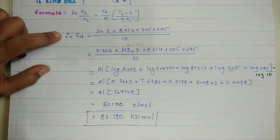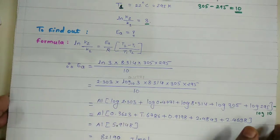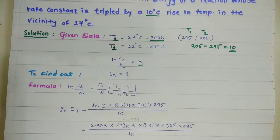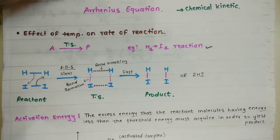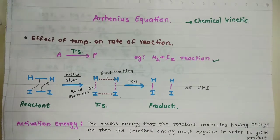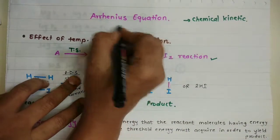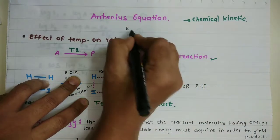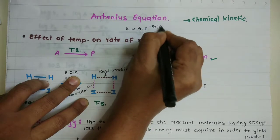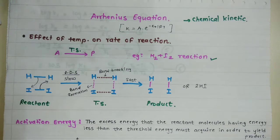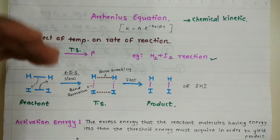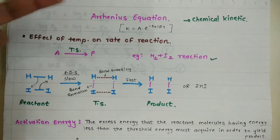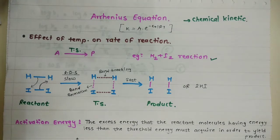The Arrhenius equation k = A·e^(−Ea/RT) shows that as you increase the temperature, the value of k increases, meaning your rate constant and rate of reaction both increase. If you like this video, don't forget to subscribe, and thanks a lot for watching.